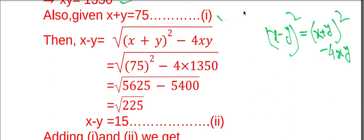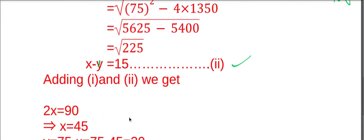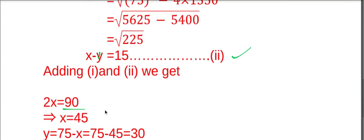If we add these two equations, equation number one and equation number two, Y cancels, then 2X equals 75 plus 15, that is equal to 90. So X equals 90 by 2, that is equal to 45.